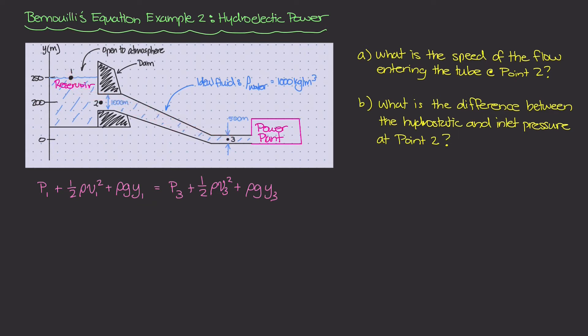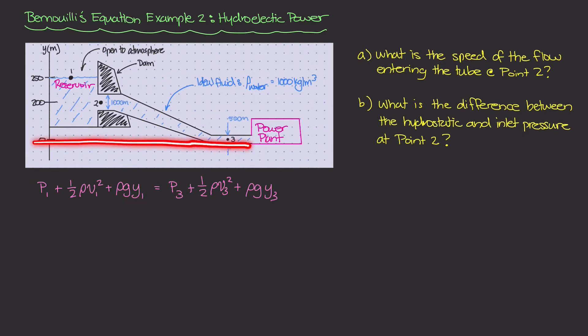Bernoulli's equation for points one and three along the streamline reads: P₁ + ½ρv₁² + ρgy₁ = P₃ + ½ρv₃² + ρgy₃. Here P is pressure, ρ is mass density, v is fluid velocity at that point, g is the gravitational constant, and y is the elevation from the datum. For point one, y₁ = 250 meters; for point three, since it's at the datum, y₃ = 0.